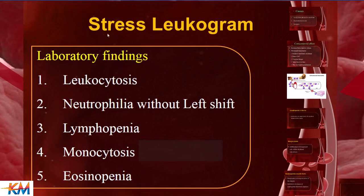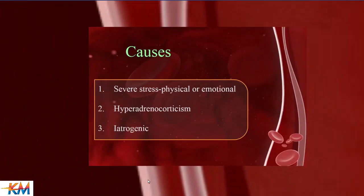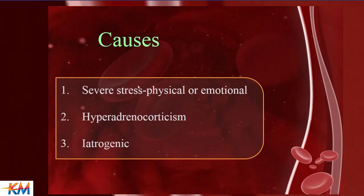The second type is stress neutrophilia, also called stress leukogram. Laboratory findings include leukocytosis, neutrophilia without left shift, lymphopenia, monocytosis, and eosinopenia. Stress leukogram occurs due to severe physical or emotional stress, hyperadrenal conditions, or iatrogenic causes where corticosteroid therapy has lasted for a long period.